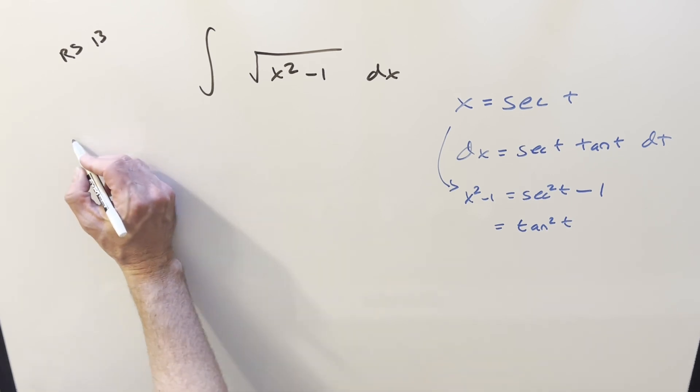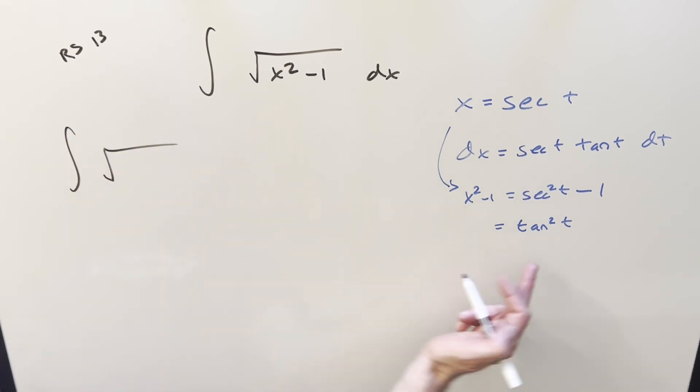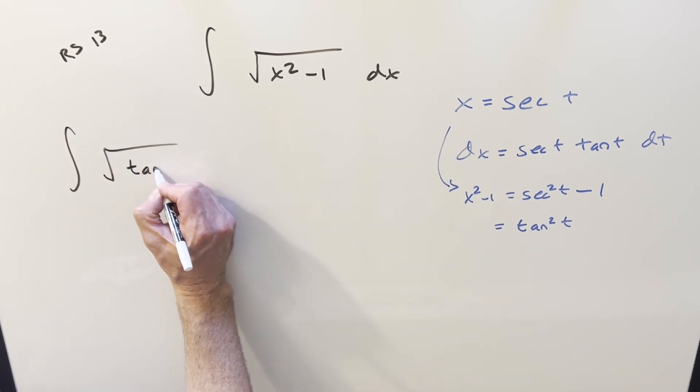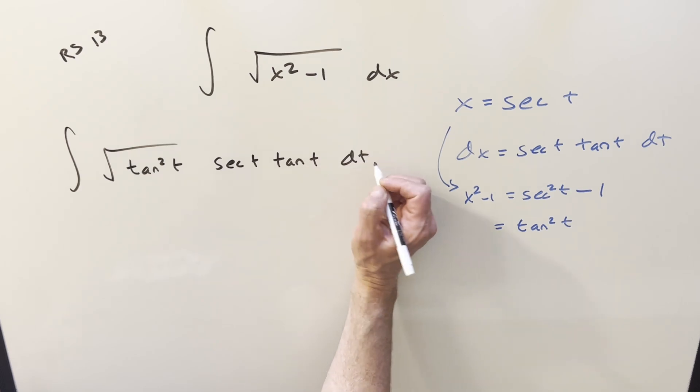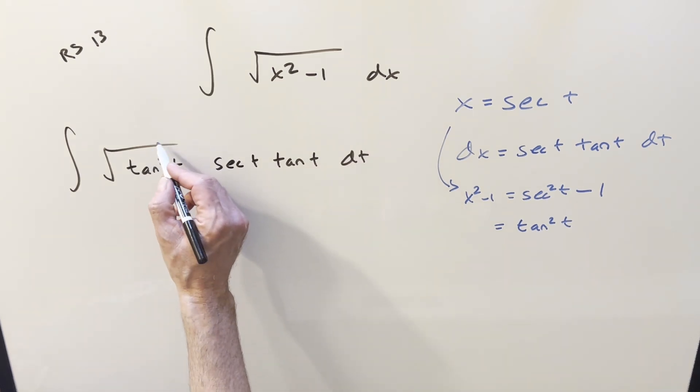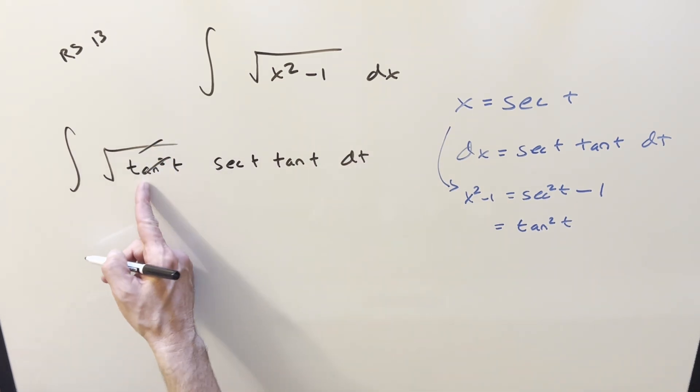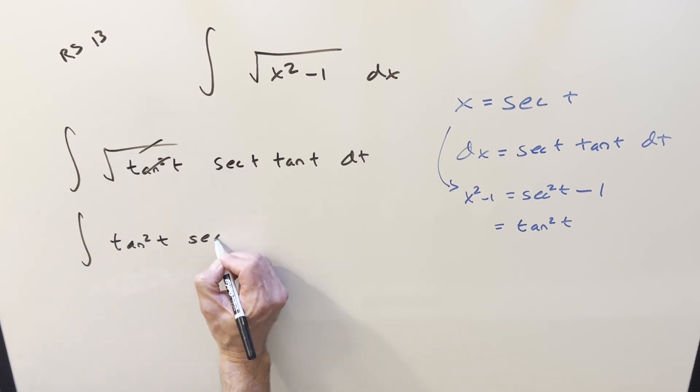So we'll go ahead and substitute, plugging in our tan squared t value here, and then our dx is going to be all this stuff. But tan t inside the square root. So let's cancel that, multiply tan t times tan t, and what we have is tan squared t times secant t dt.